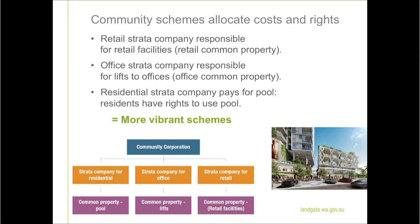Community schemes allocate costs and rights clearly. The retail strata company is responsible for managing and maintaining the retail facilities, including retail common property such as retail walkways and escalators. The office strata company is responsible for managing and maintaining the office common property, including the lifts to the office tower. The residential strata company is responsible for maintaining the residential common property, including the pool, the gym and the garden. Each of these strata companies matches a sub-scheme within the community scheme and all operate under the community corporation.